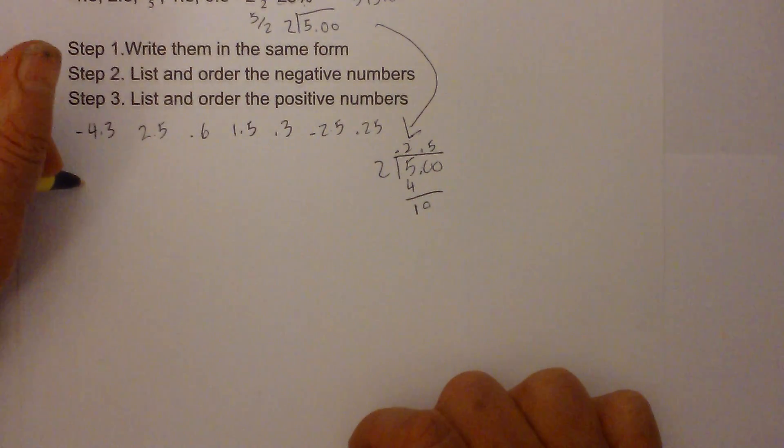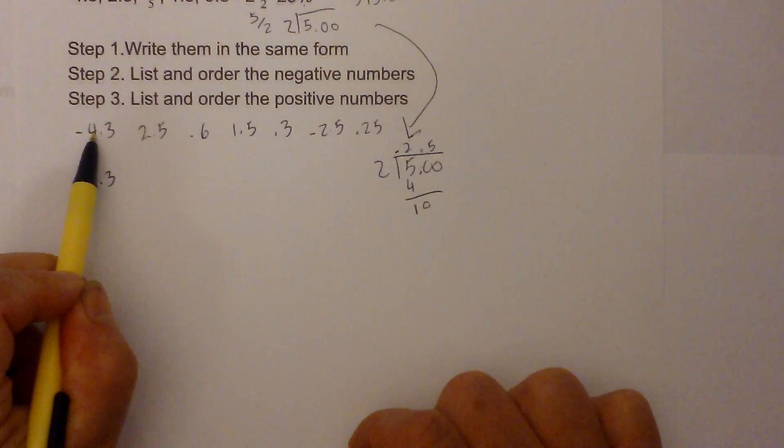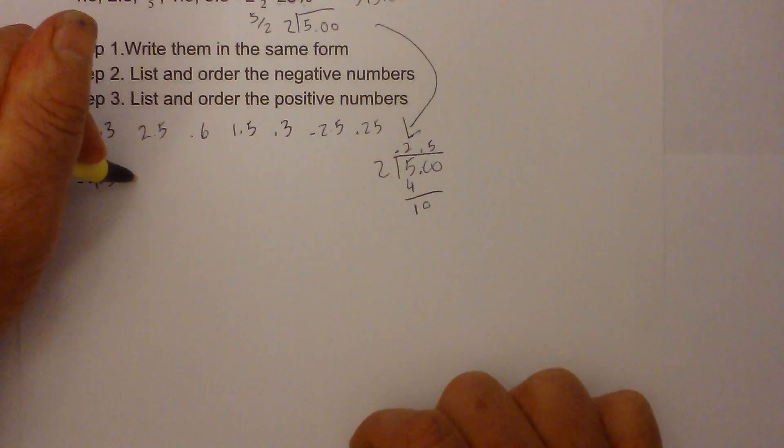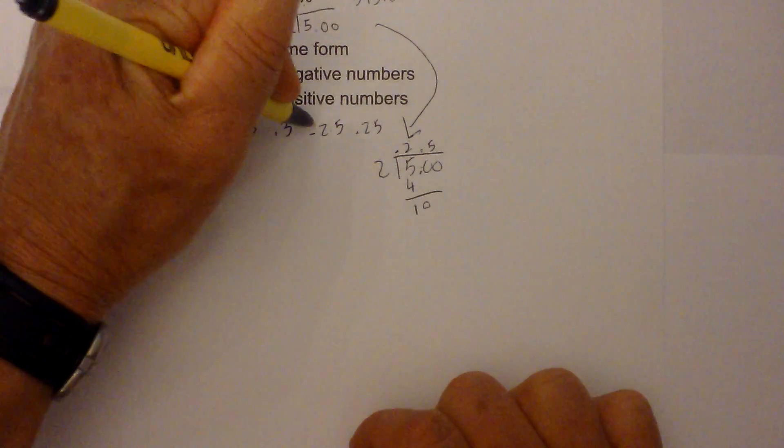So I am going to start with the negative numbers. I have negative 4.3, remember with negative numbers, the larger the number, the smaller it is. So I have negative 4.3, now I have negative 2.5, okay, I am going to put a check by this.